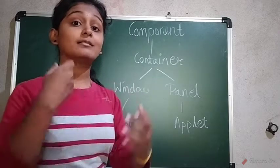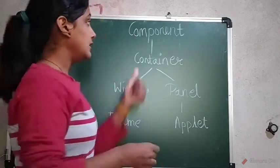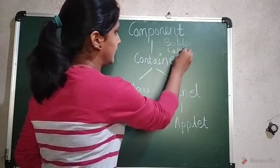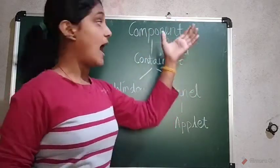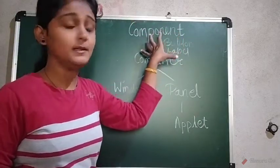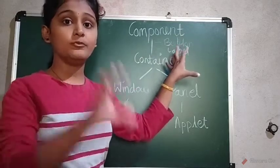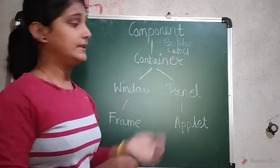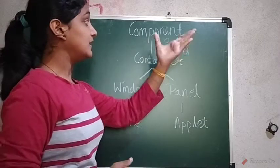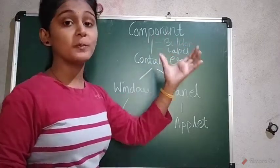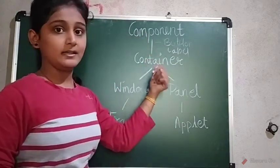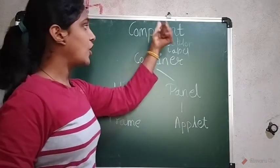The Component class is responsible for whatever you see on the screen in the GUI — the button, text field, and so on. It is a superclass, meaning Button, Label, and many more controls are subclasses of the Component class. So the Component class is responsible for having these controls on the form, and the parent class for all those controls is the Component class.